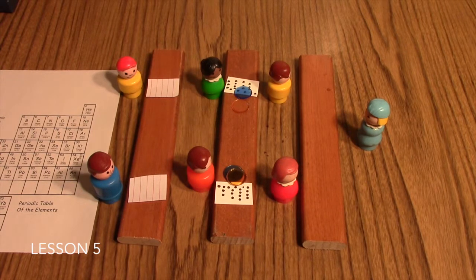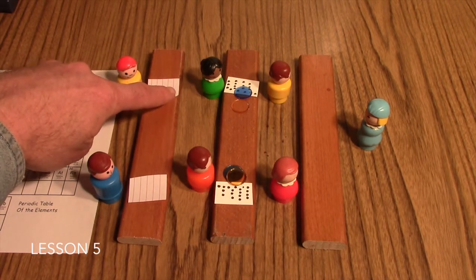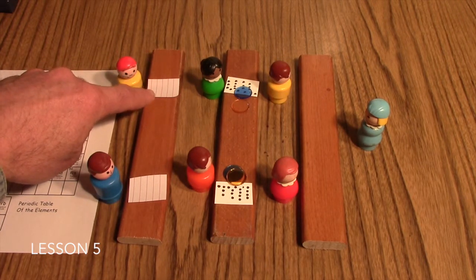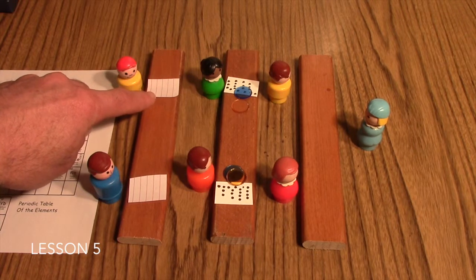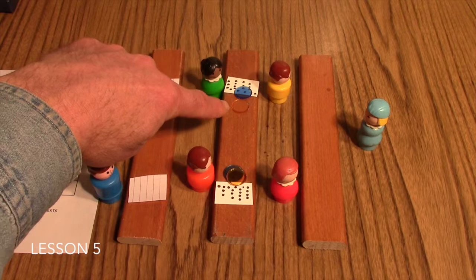Play begins by you calling out an element name. Students at the back write down that element name, symbol, and atomic number, just as they did in the board filling version. They pass the paper forward to the next table.